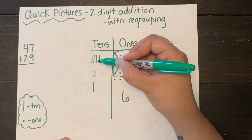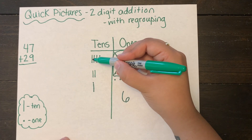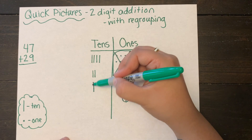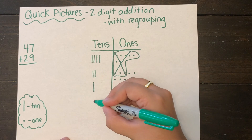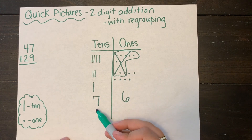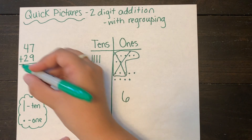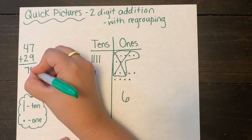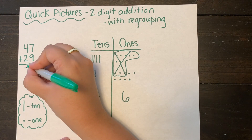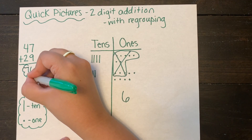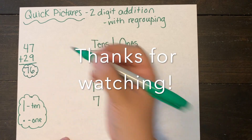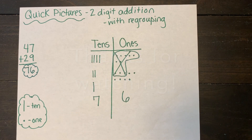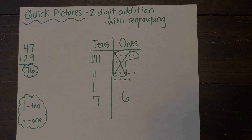So I have six ones left in my ones column, and I'm going to count up my tens column. I have seven tens. Seven tens with six ones is seventy-six. Very easy.